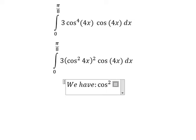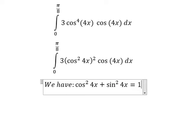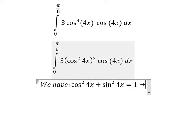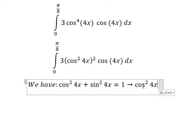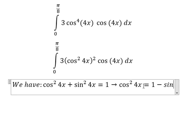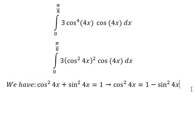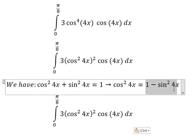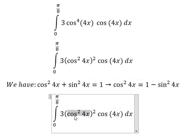Cosine 4x square plus sine 4x square equals to number 1. So we have cosine 4x square in here, so we move this one to the right. We need to change this one for this one in here.